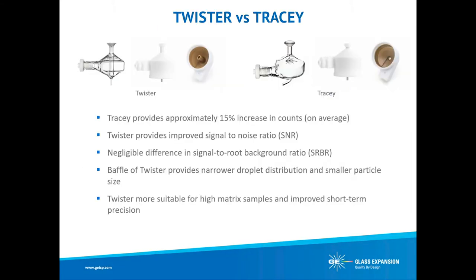The Twister cyclonic spray chamber features a central transfer tube — often referred to as a baffle — in a double-pass cyclonic design. This provides a smaller particle size and more narrow size distribution compared to the single-pass cyclonic Tracey spray chamber. Smaller droplet sizes reduce matrix effects and improve short-term precision, making the Twister the most suitable choice for high-matrix samples and the PTFE Twister for high-matrix samples containing HF. The reduced sample load helps increase torch life, slow salt buildup at the injector tip, and decrease the frequency of cleaning ICP-MS interface cones.